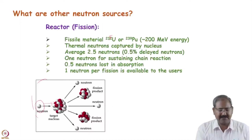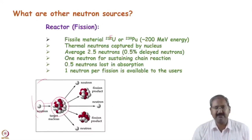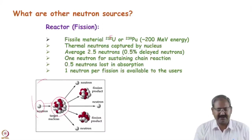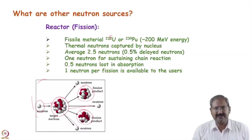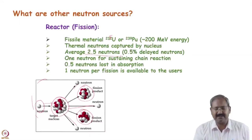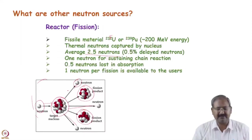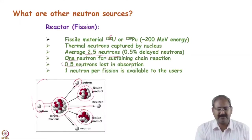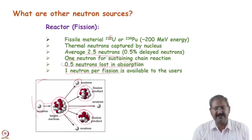This is the neutron; it impinges on the target. The target may be a uranium-235 or plutonium-239 nucleus, and after this reaction there are some fragments — some small nuclei can be created — and neutrons are generated. Two to three neutrons are generated per reaction, so on average 2.5 neutrons are generated in one nuclear reaction. Out of these 2.5, one neutron is used for sustaining the chain reaction and roughly 0.5 neutrons are lost in absorption, so 1 neutron per fission is available to the user.